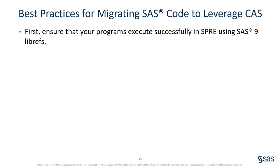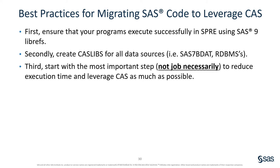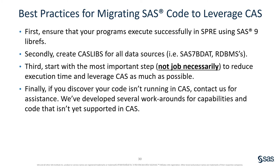As a first step, ensure that all of your code and programs execute successfully in SPRE using SAS 9 librefs. Secondly, create CAS librefs for all of your data sources — this could be data residing in relational databases or traditional SAS data sets on a file system. Third, start with the most important step or block of code that takes the longest amount of time to run, not necessarily an entire program, so that we can reduce execution time and leverage CAS as much as possible. Finally, after you've done these three steps, if you discover that your code is not running in CAS, contact myself or your local SAS representative. We've developed several workarounds for capabilities in code that isn't yet supported in CAS, and I can also troubleshoot why it's not executing in CAS.